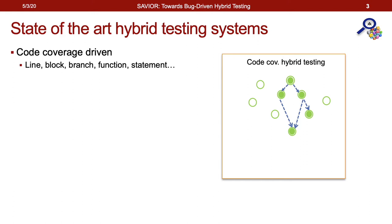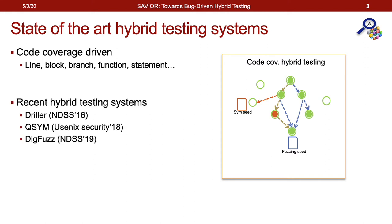The state-of-the-art hybrid testing systems are code-coverage driven. Each code-coverage entity could be viewed as a line, block, or branch coverage. We denote each entity as a node. If the fuzzer finds a new node using a mutated input, it will save the input for future exploration. When the fuzzer gets stuck, we use concolic execution to revisit the same path and find if there is an extra node that could be reached when the branch condition is satisfied. The concolic execution engine can then call an SMT solver to generate a new input that can cover the new branch.